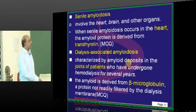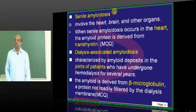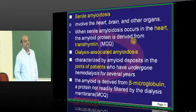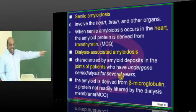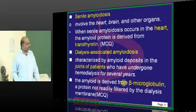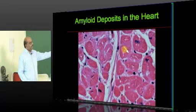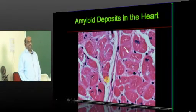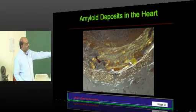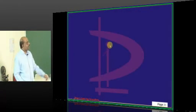In senile amyloidosis in elderly people, mainly the heart is involved, and the protein implicated is transthyretin — just as in Portuguese polyneuropathy. Transthyretin is also implicated in senile cardiac amyloidosis. Those undergoing dialysis for a long period develop dialysis-related amyloidosis, where beta-2 microglobulin is the protein implicated.